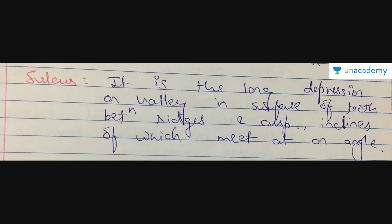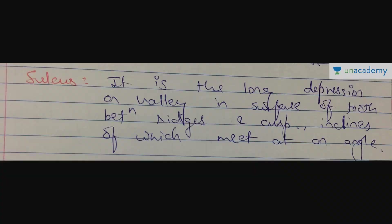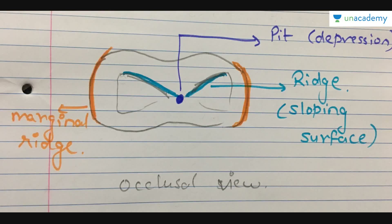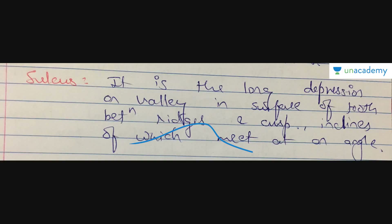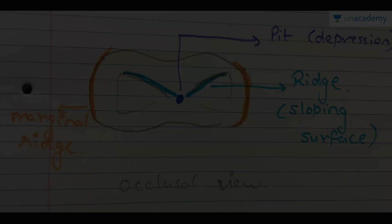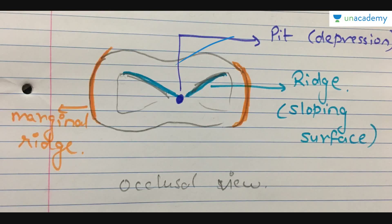A sulcus is a long depression or valley in the surface of a tooth between ridges and cusps, the inclines of which meet at an angle. On the occlusal view, this sulcus area is a deep valley-like depression in the surface of the teeth that forms at an angle. In premolars, the sulcus will be more evident.